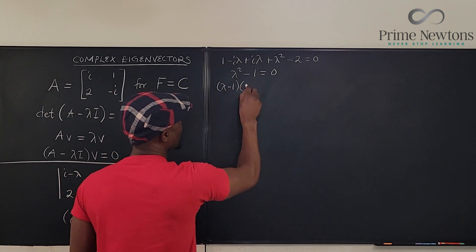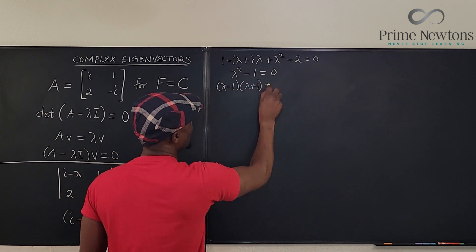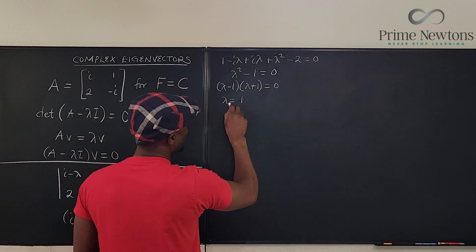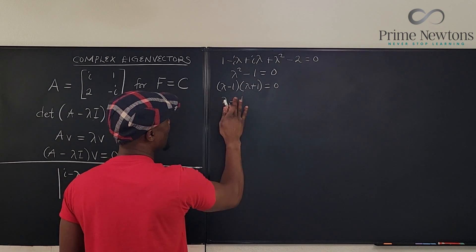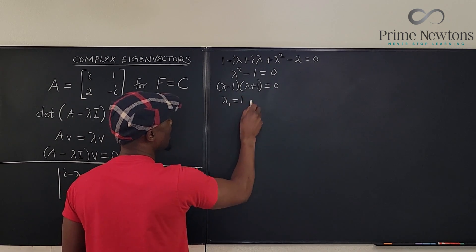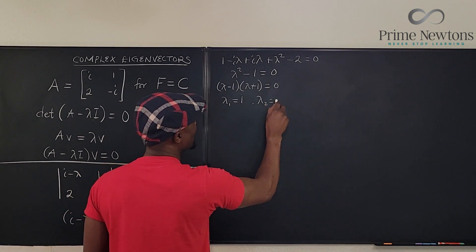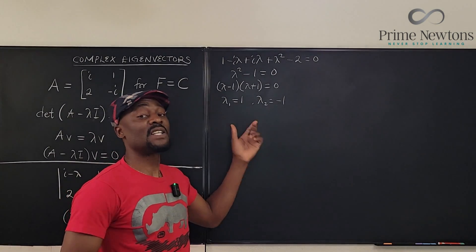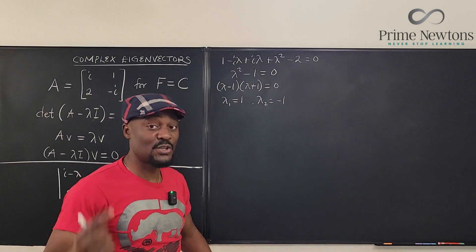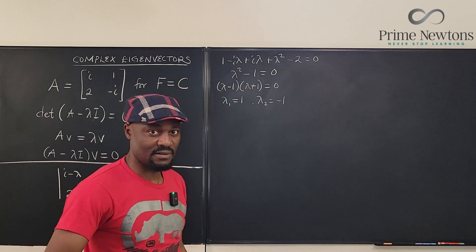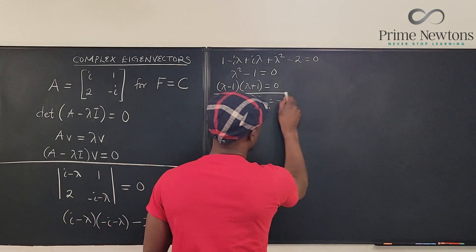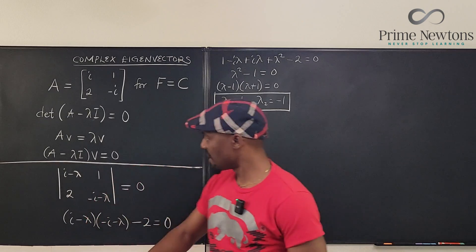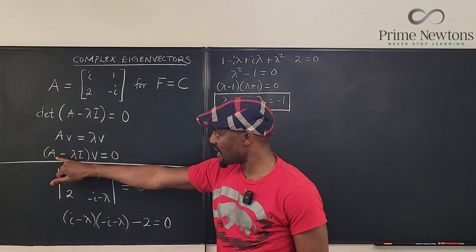Cleaning up: lambda squared minus 1 equals zero. We recognize this as a difference of two squares: (lambda minus 1)(lambda plus 1) equals zero. So lambda equals one or lambda equals negative one. Lambda one equals one, and lambda two equals negative one — these are the two eigenvalues we'll use to find our eigenvectors.